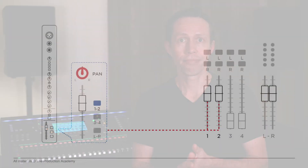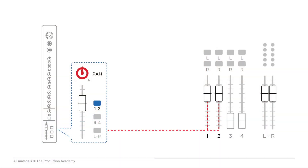We usually assign channels to groups in the same place we assign them to the main mix. On digital consoles this is done in the software, and on analog consoles it is usually done near the fader. Analog consoles often have the groups in stereo pairs, and the pan knob can be used to send signal to the odd or the even group.